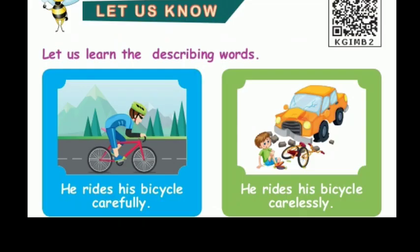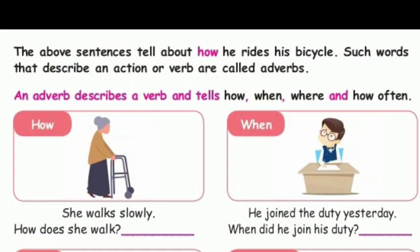Let us learn the describing words — adverbs. For example: 'He rides his bicycle carefully.' The adverb gives extra information about the action. Such words that describe the action of a verb are called adverbs. An adverb describes a verb and tells how, when, where, and how often.